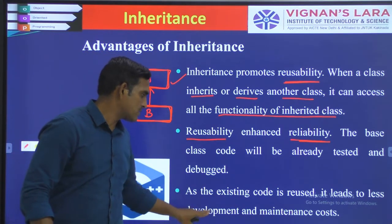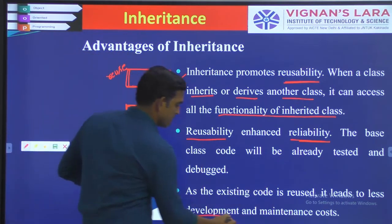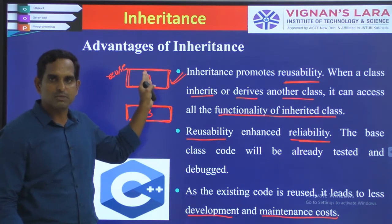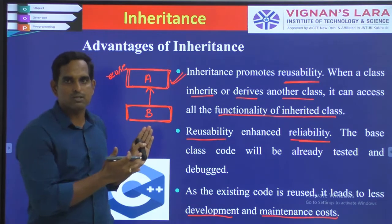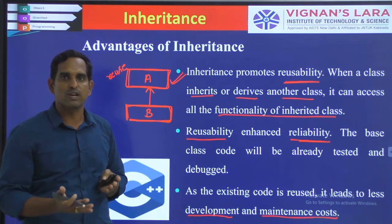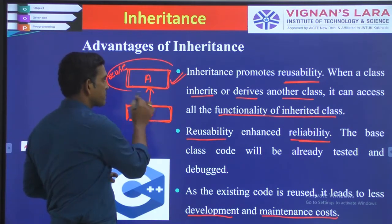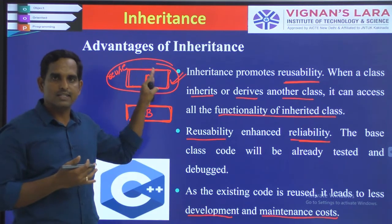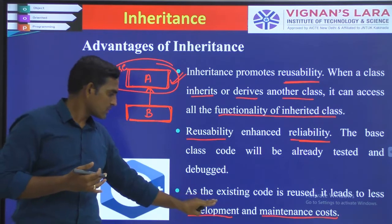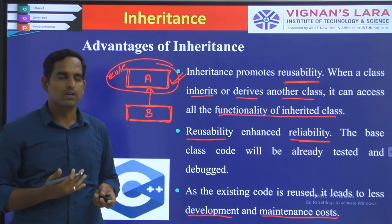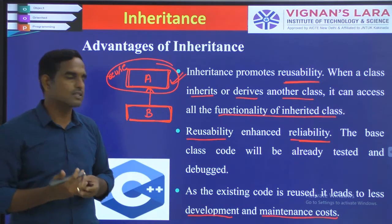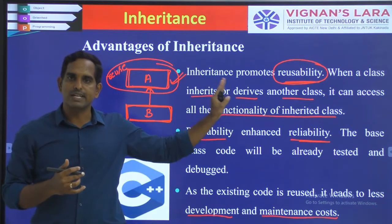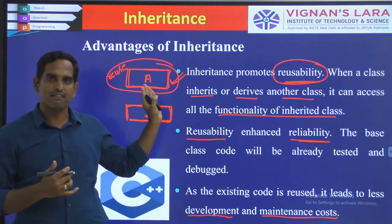As the existing code is reused, it leads to less development and maintenance cost. You need not rewrite this code and you need not develop the complete part. This might seem simple with small programs, but with large programs where large numbers of lines of code are involved, inheritance provides lots of savings in development and maintenance cost. You need not develop or maintain the code of an already existing class. The main thing to understand while implementing inheritance is the reusability part — that is the most important advantage.